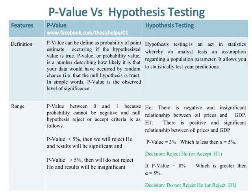If the p-value is less than the 5% level of significance, then we will reject H0 and the results will be significant. If the p-value is greater than the 5% level of significance, then we do not reject H0 and the results will be insignificant.